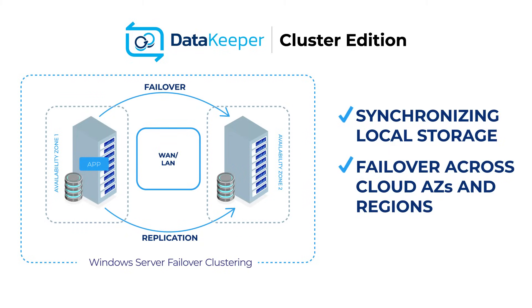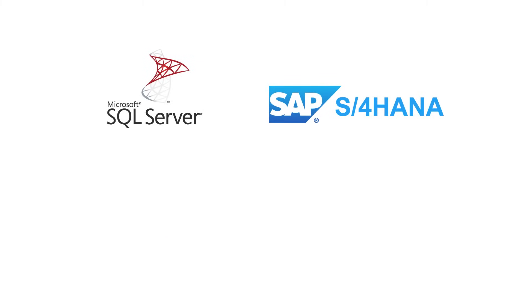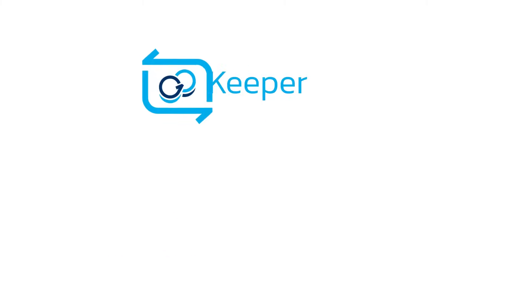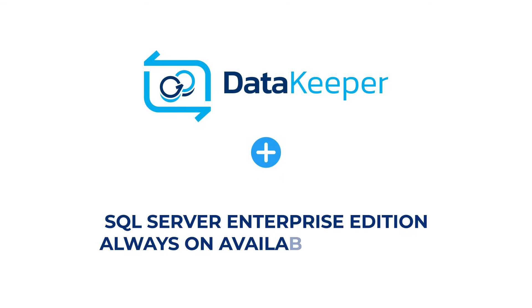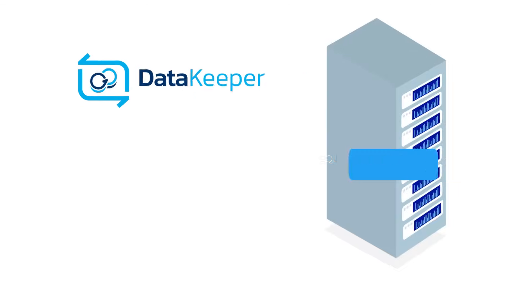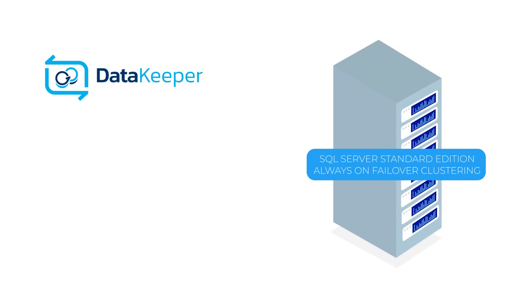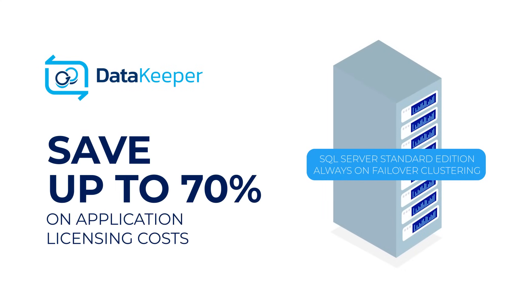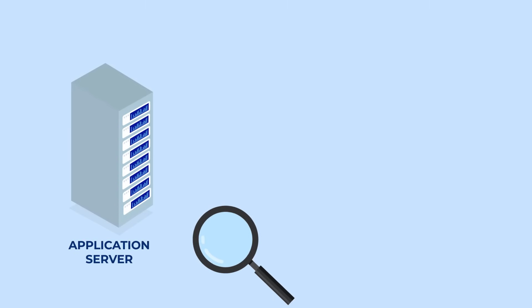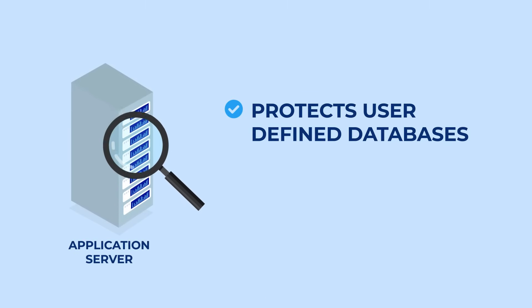Some commonly protected applications include SQL Server, SAP, MaxDB, File Servers, and others. Use SIOS DataKeeper with SQL Server Enterprise Edition always-on availability groups, or pair it with SQL Server Standard Edition always-on failover clustering to save up to 70% on application licensing costs.